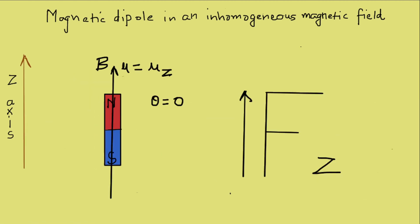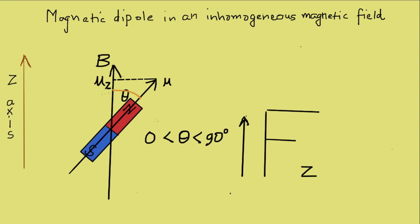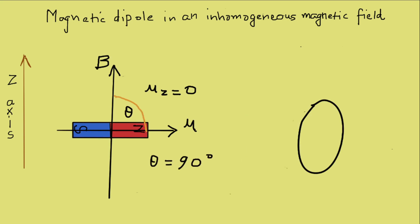Now let us see how the force on the magnetic dipole varies as the angle changes from zero degrees to 180 degrees. At theta of zero degrees, mu is equal to mu_z as mu cos zero is one, so the maximum force in the z direction is exerted. At theta between zero and 90 degrees, the force is less as mu_z is lesser but still in the upwards direction. At 90 degrees, the magnetic dipole does not exert any force in the z direction as cos 90 is zero.